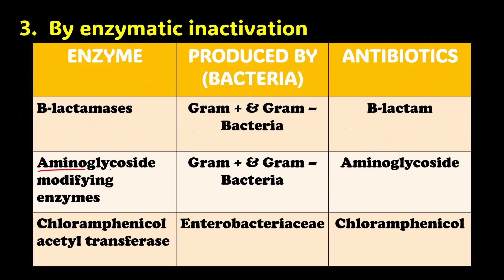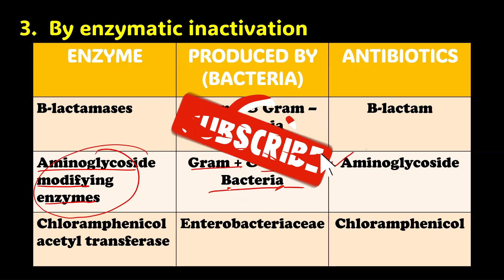The second example is aminoglycoside-modifying enzymes. This set includes acetyltransferases, adenyltransferases, and phosphotransferases. These enzymes are produced by both gram-positive and gram-negative bacteria and are active against aminoglycosides.